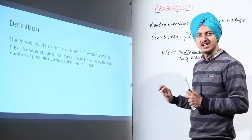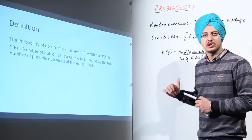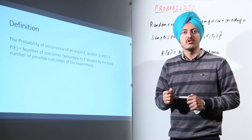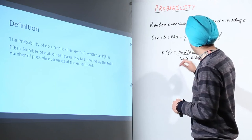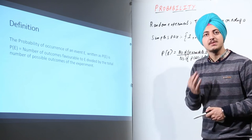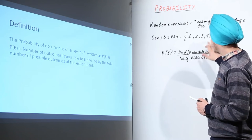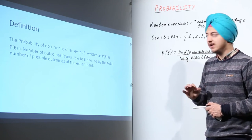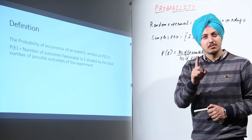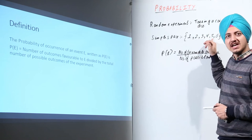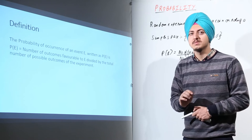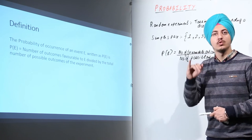Let's look at a few examples. Say we roll a dice and need to find the probability of occurrence of 5. The sample space is {1, 2, 3, 4, 5, 6}. Using the formula — number of favorable outcomes upon number of possible outcomes — there is one favorable outcome, which is 5, and the total number of possible outcomes is 6. So P(E) = 1/6.